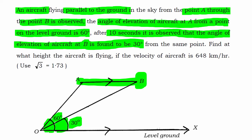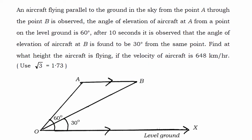Now, they are asking find what height the aircraft is flying. What is given? They have given that the velocity of the aircraft is 648 kilometers per hour. So there is an aircraft which goes from A to B flying at 648 kilometers per hour. When it was at A the angle from O was 60 degrees. When it was at B the angle was 30 degrees. What they have asked to find is the height.